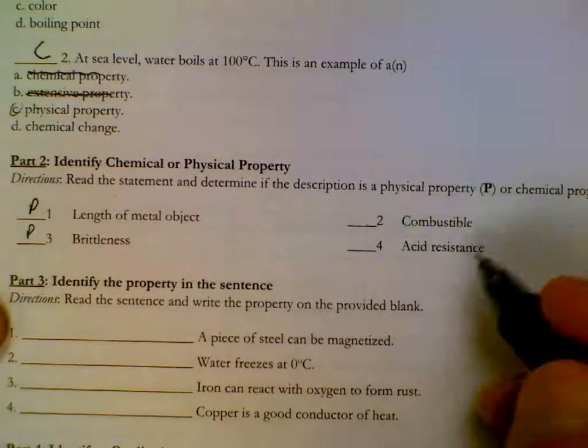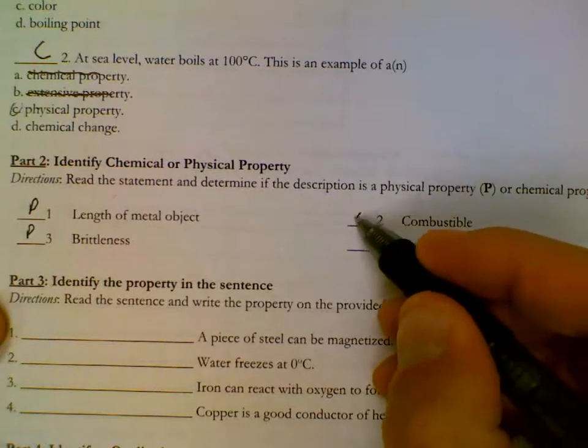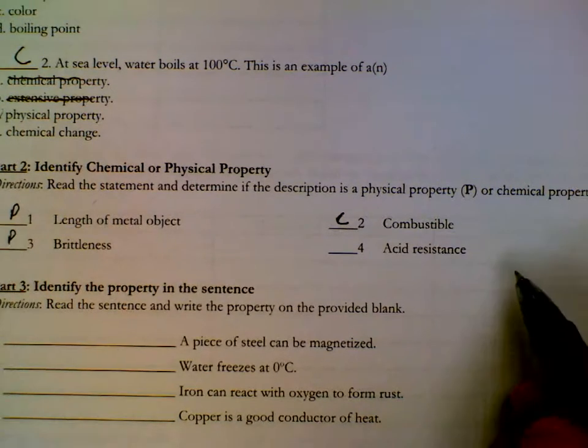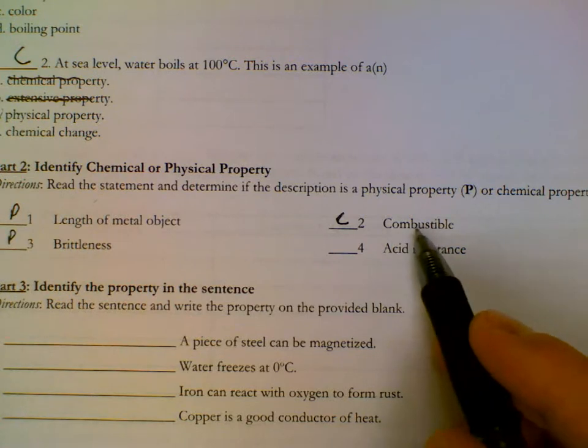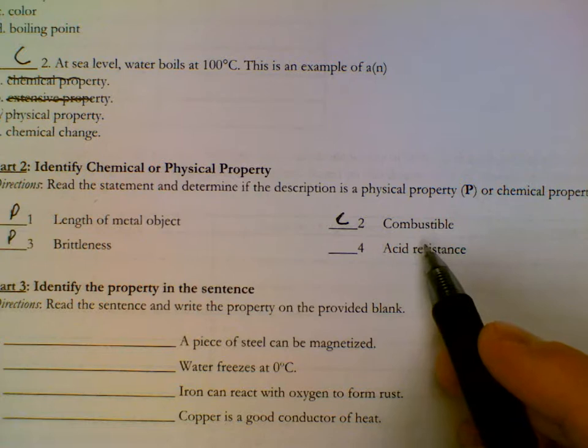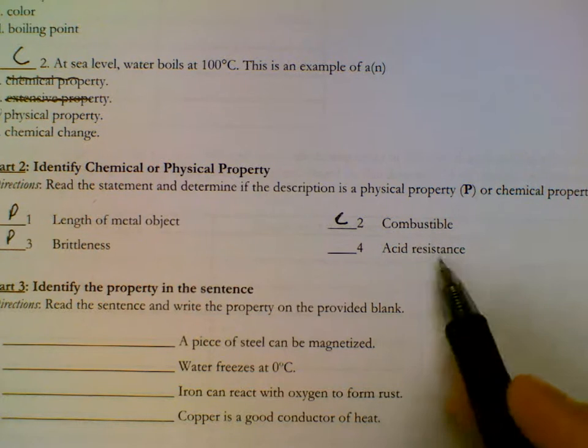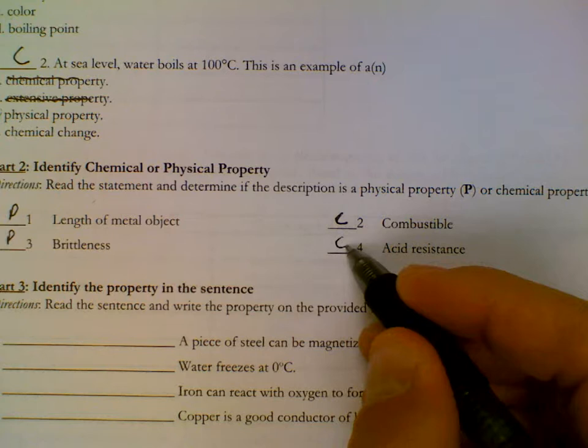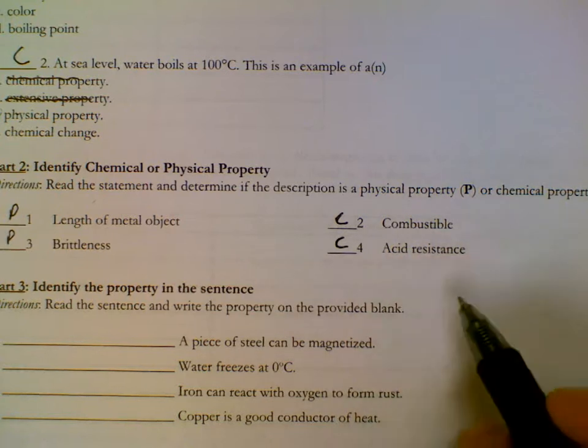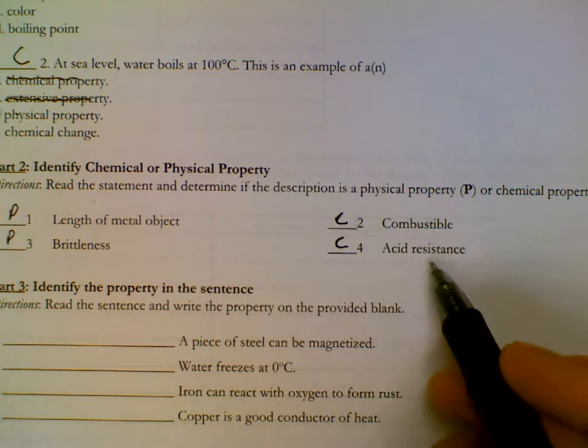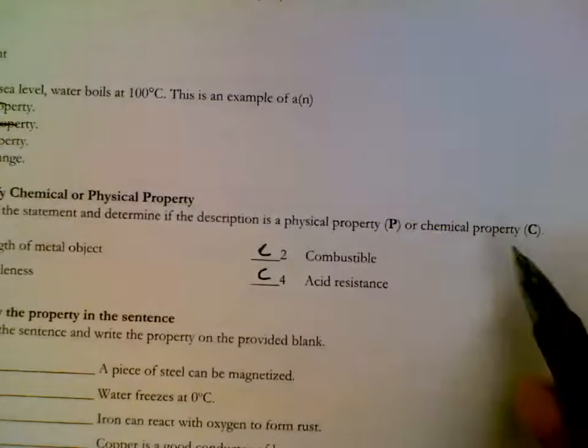Something burning would be a chemical property. Something can burn, that's chemical. It's talking about how it can or can't combust, how it can or can't burn. Burn is a similar word to react. Acid resistance would also be chemical, saying that something can't react with an acid. Not reacting is a chemical property of a substance.